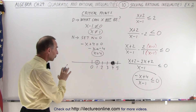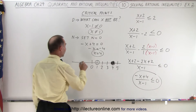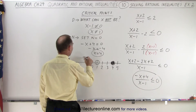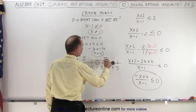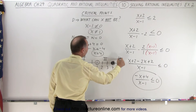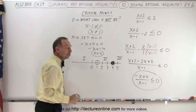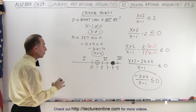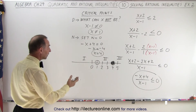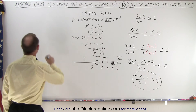We have two critical points, which means there are three regions: region number one, region number two, and region number three. We're going to find the signs of each of the denominator and numerator for each of the three regions.